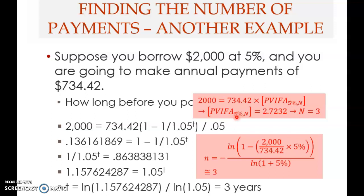However, as we've seen in other problems, you may not always be able to use the table, because not all interest rates are listed — for example, 5.2 percent or 5.75 percent are not in the table. Also, the table doesn't include fractional periods or fractional interest rates.